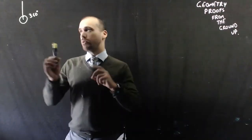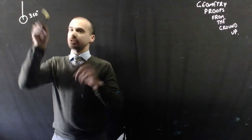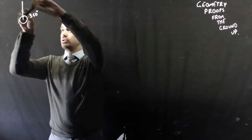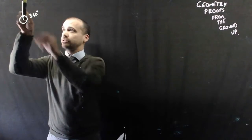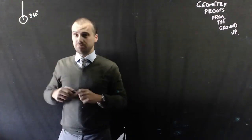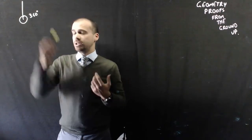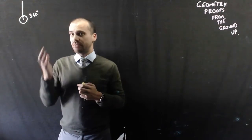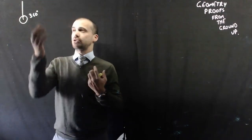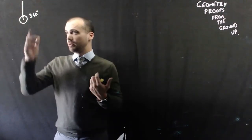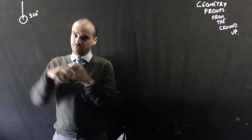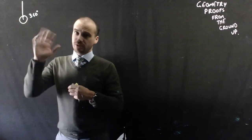Somebody somewhere decided that in a circle, if you start by facing north and turn all the way through that circle, we can say that's 360 degrees of measurement. That was just something that someone made up. It's useful because it's got so many factors — it's easy to break up into multiple different sections — but there's no reason to choose 360 apart from that. That we know; we can't really prove it because it's an invention.